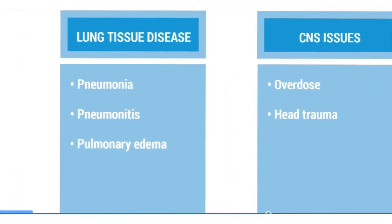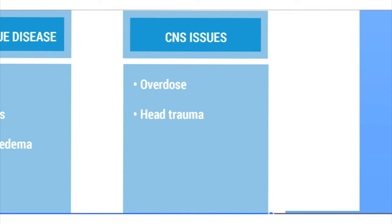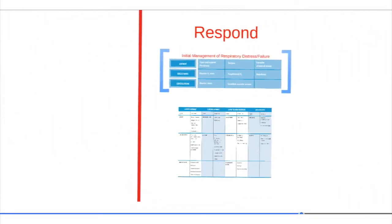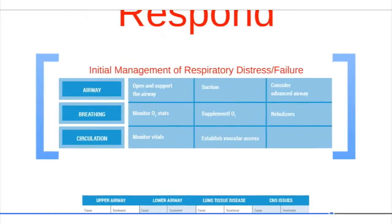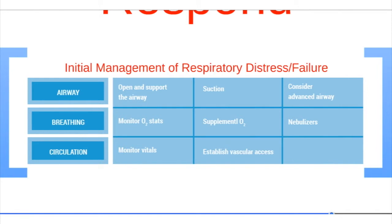A CNS issue is due to overdose or head trauma. Initial management of respiratory distress or failure includes opening the airway, suctioning, and considering advanced airway management. Management of breathing includes monitoring oxygen saturation, giving supplemental oxygen, and nebulizers. Management of circulation involves monitoring vital signs and establishing vascular access.